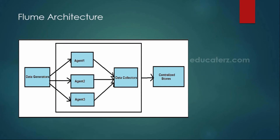If you see the Flume architecture, you have data generators and especially a component called a Flume agent. You can have multiple Flume agents. These are all responsible to collect the data from the generators and then collect that into the data collectors, and finally store that into centralized stores such as your Hadoop Distributed File System.